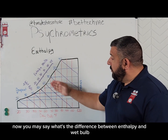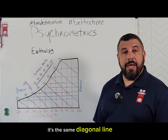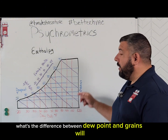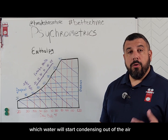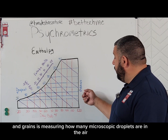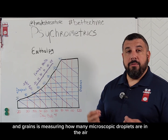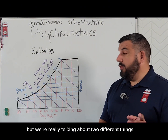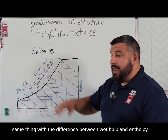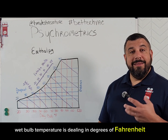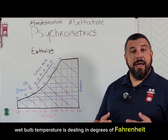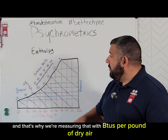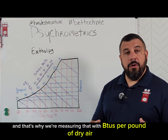Now you may say, what's the difference between enthalpy and wet bulb? It's the same diagonal line. Well, it's very similar to asking what's the difference between dew point and grains. Dew point is measuring the temperature at which water will start condensing out of the air, and grains is measuring how many microscopic droplets are in the air. So we're using the same line, but we're really talking about two different things. Same thing with wet bulb and enthalpy — wet bulb temperature is dealing in degrees Fahrenheit, it's a temperature, but enthalpy is measuring energy. And that's why we're measuring that with BTUs per pound of dry air.